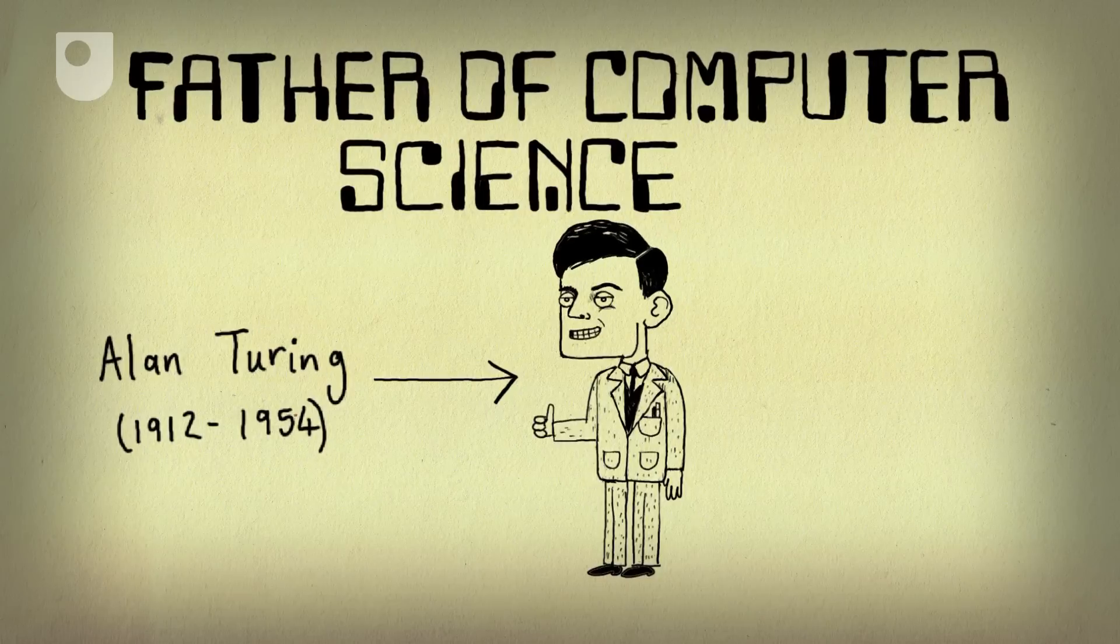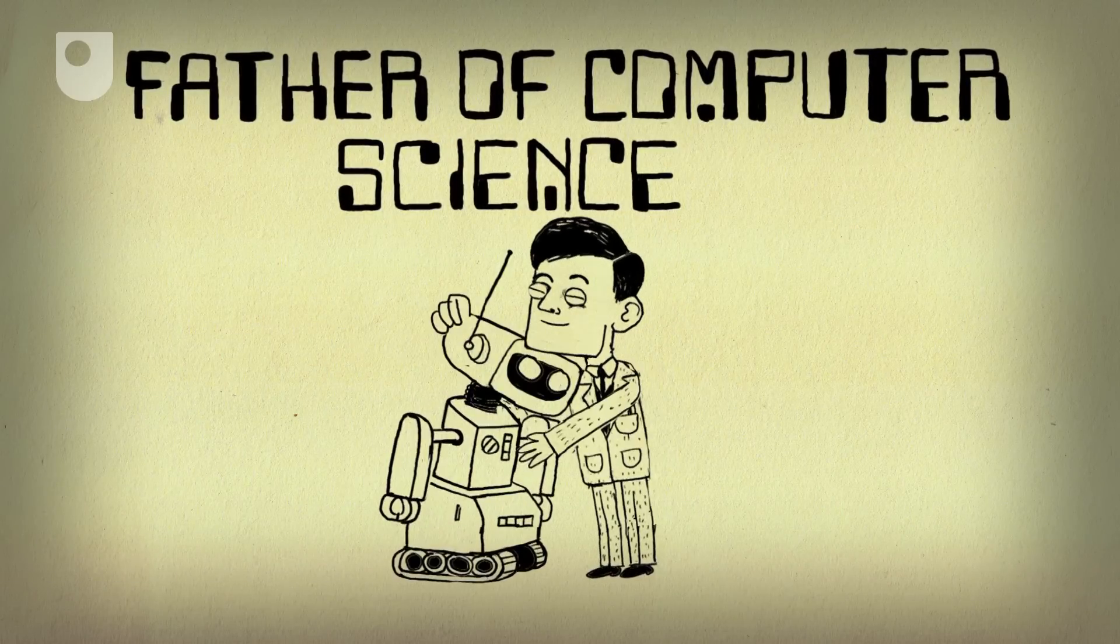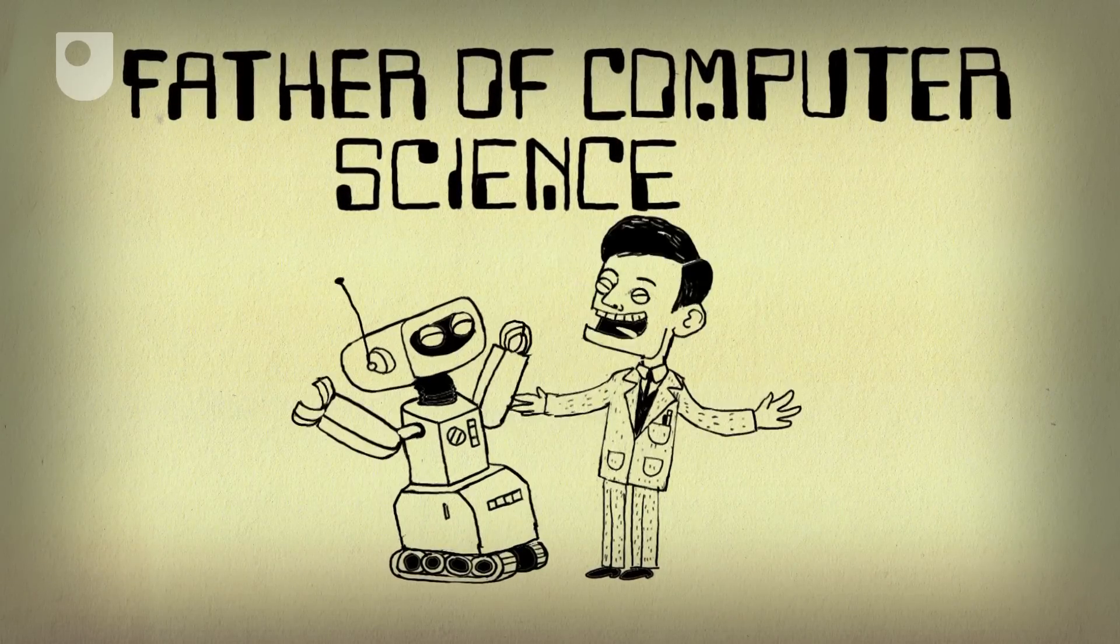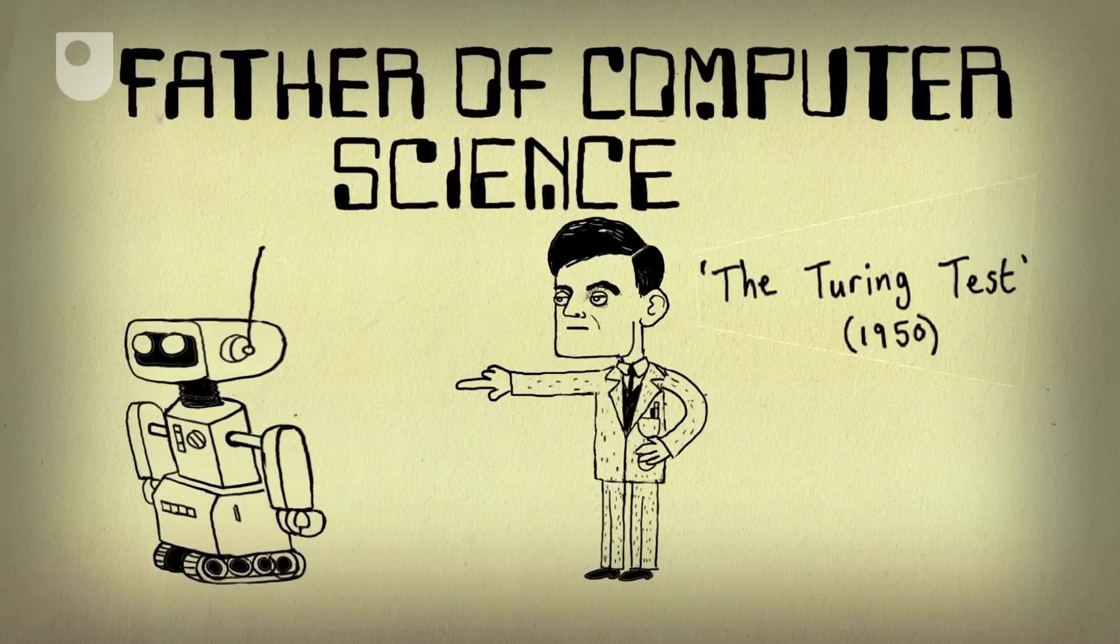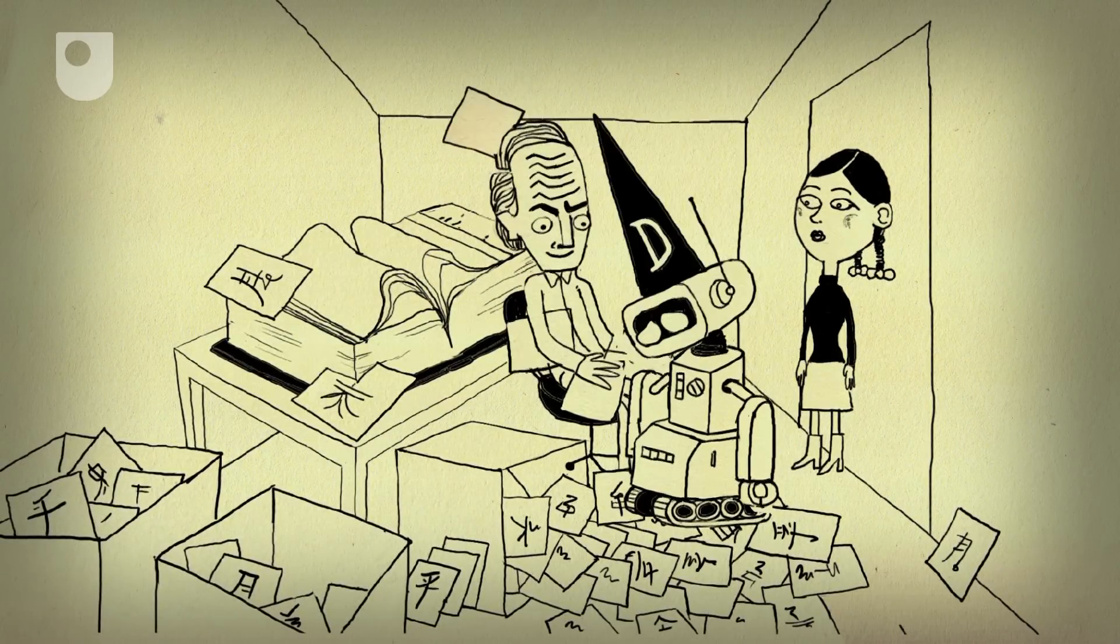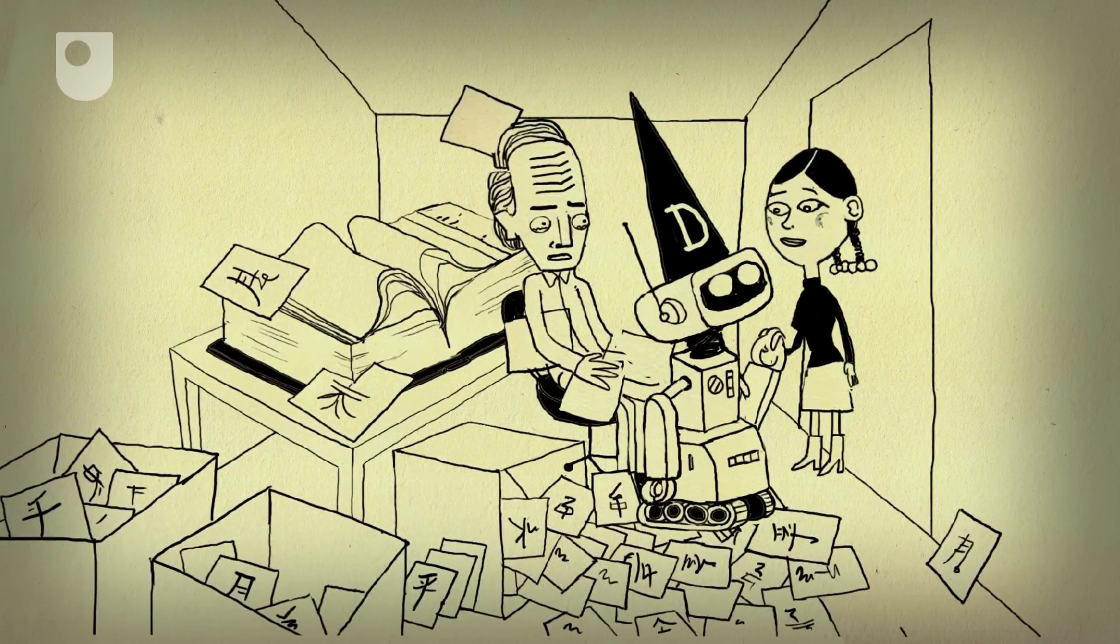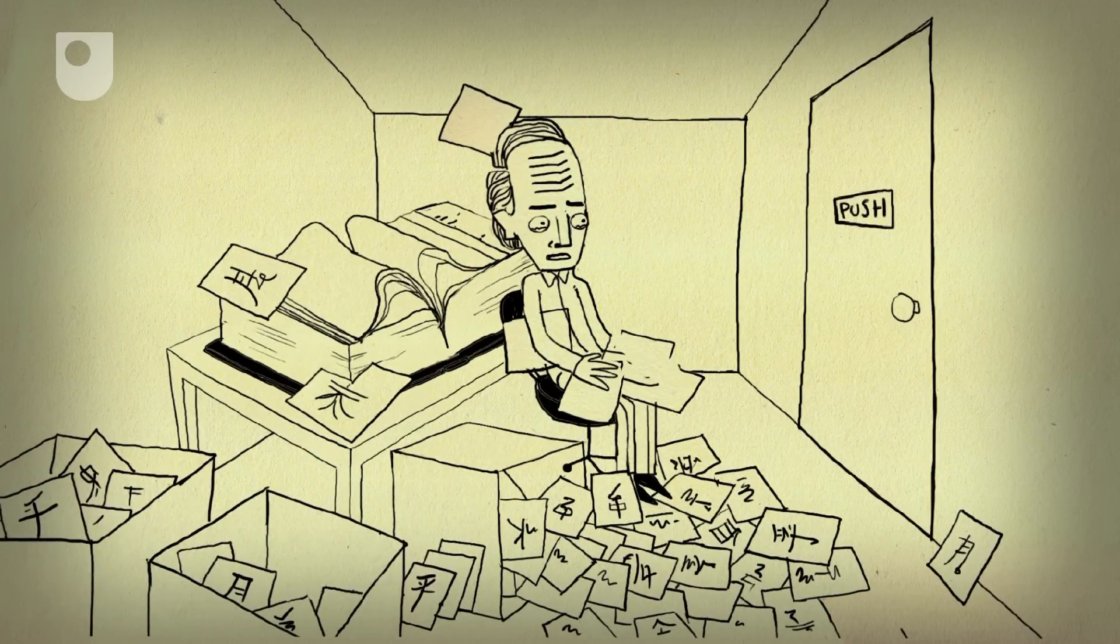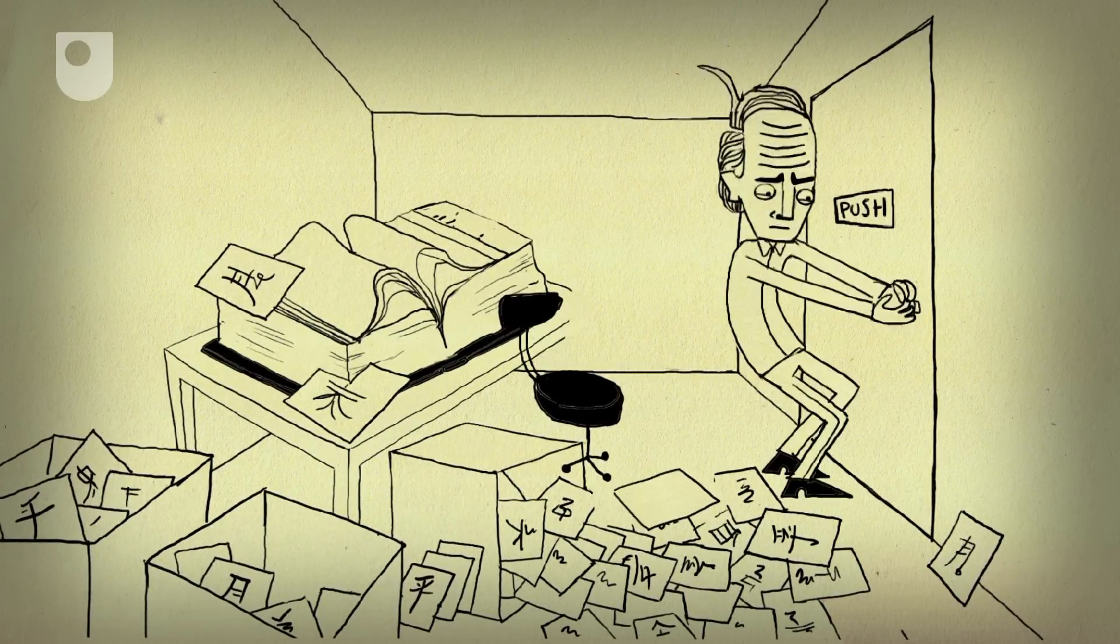Now, according to Alan Turing, the father of computer science, if a computer program can convince a human they're communicating with another human, then it could be said to think. The Chinese Room suggests that, however well you program a computer, it doesn't understand Chinese, it only simulates that knowledge, which isn't really intelligence. But then sometimes humans aren't that intelligent either.